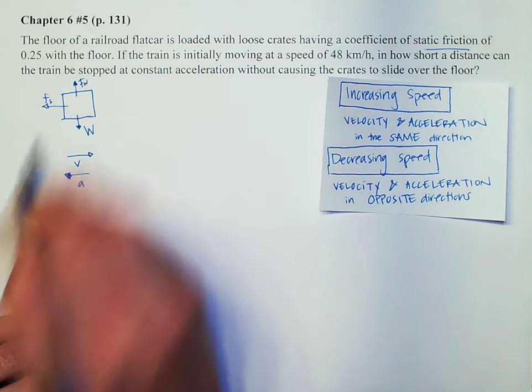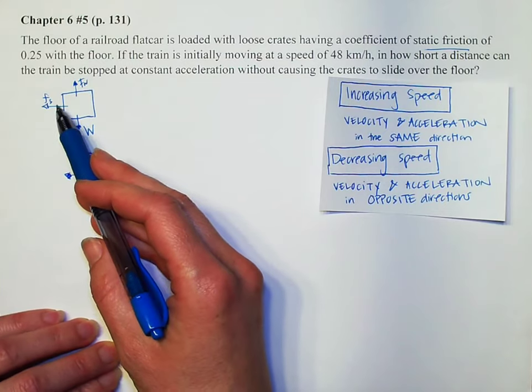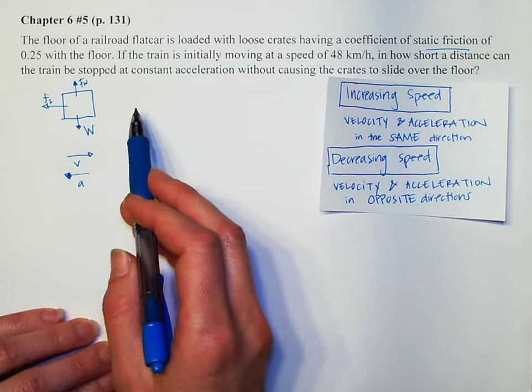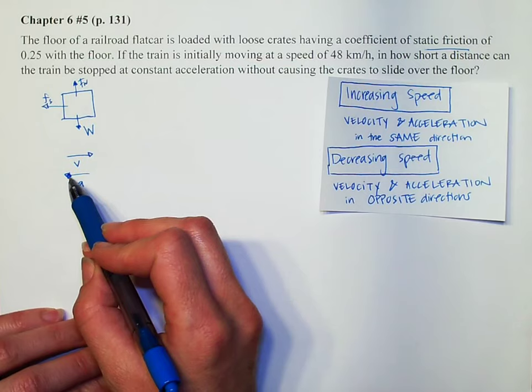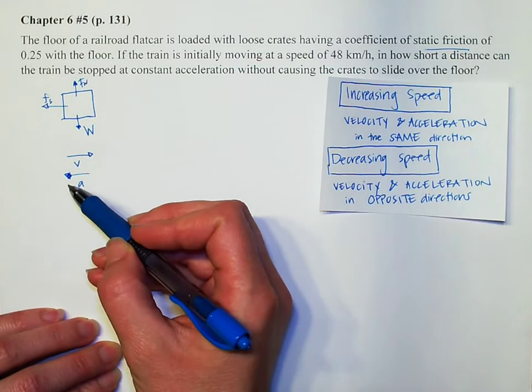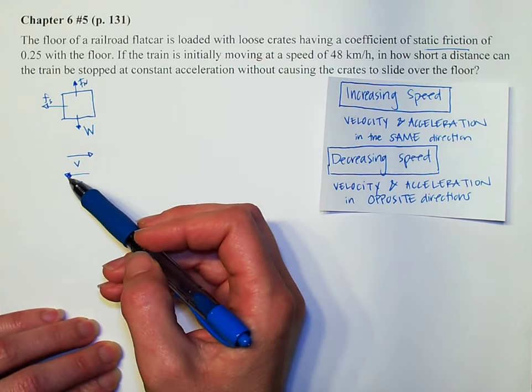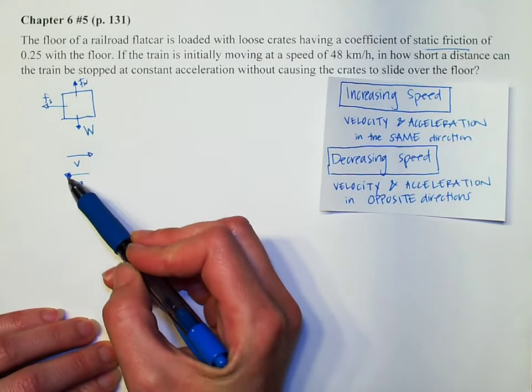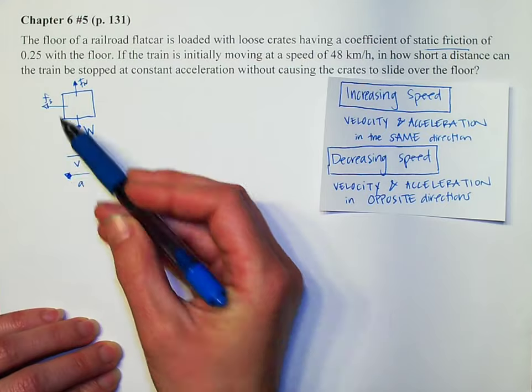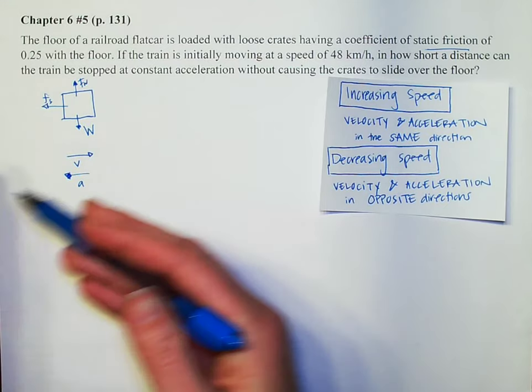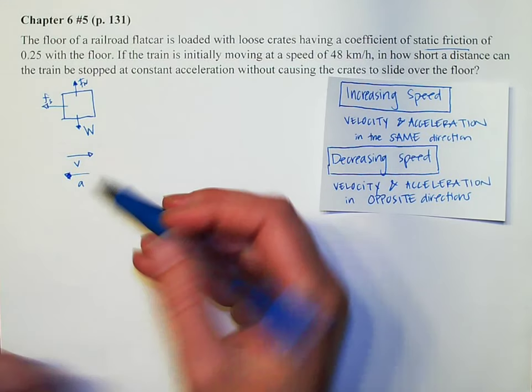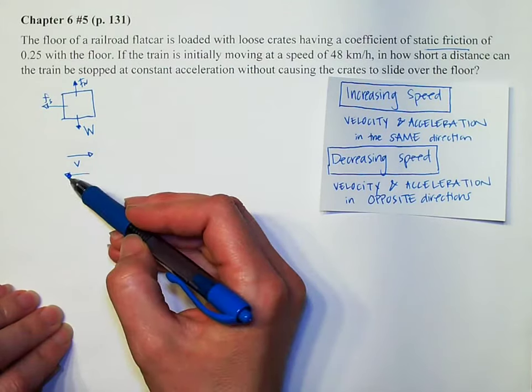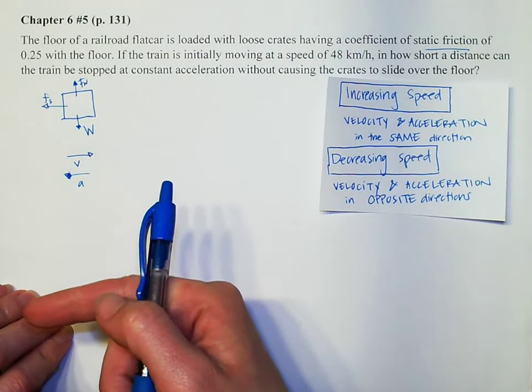I'm going to write static friction so that we remember static. The other indication is that my force, this is the only force in the x direction. And since my acceleration is in this direction, since f equals ma, that indicates to us that our force, or sum of our forces, and our acceleration must be going in the same direction. So hopefully intuitively you figured out friction goes that way. And because of f equals ma, mathematically friction must go in that direction.